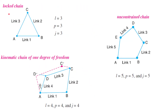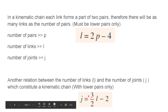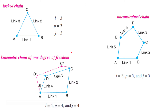Let's take the first example: a triangle. Here l = 3, number of pairs = 3, and number of joints = 3. There are three pin joints, three links, and three pairs. When we put l, p, and j into the formula, we see that l is greater than 2p − 4, and similarly j is greater than 3/2 · l − 2.